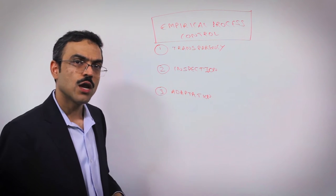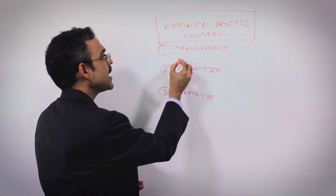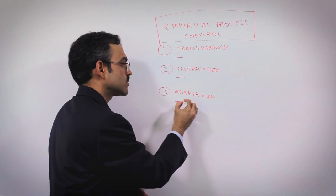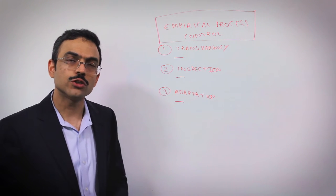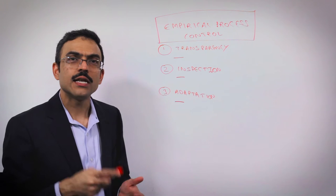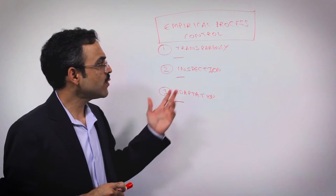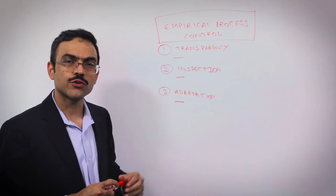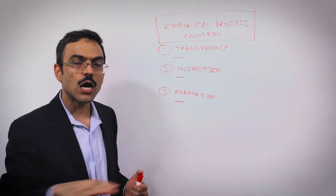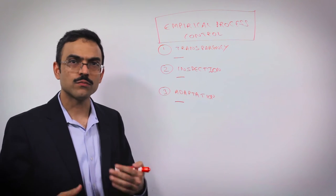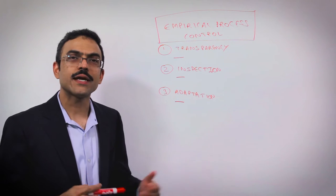Now, here's my question to you: What happens if any one of these pillars is neglected or is not used effectively? Let's take the cooking example. If we were cooking and we did not have transparency and we could not see how the dish was shaping up on the stovetop, what might happen?